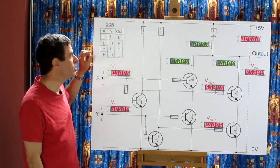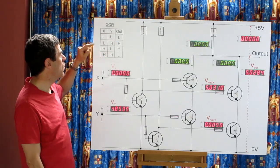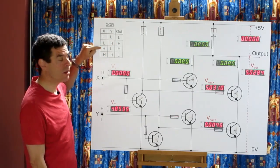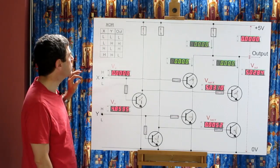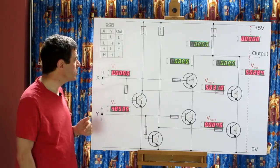The exclusive OR function: you get a high out when either X is high or Y is high, but not both. So let's just see it in action first.